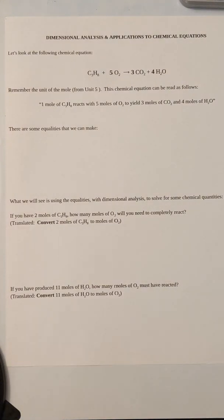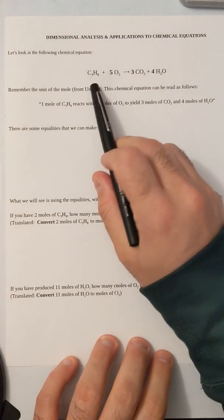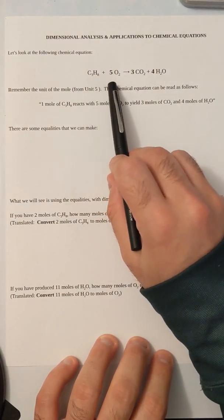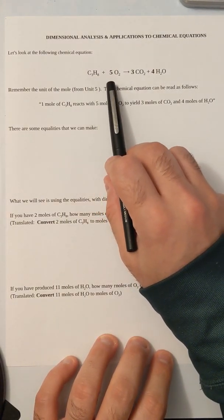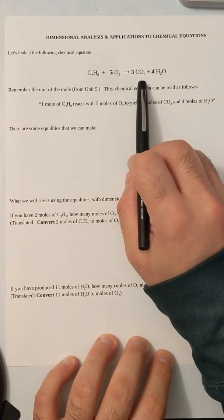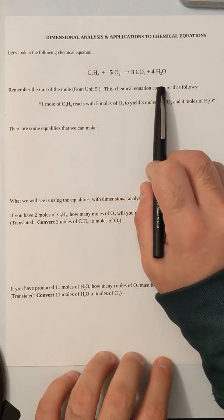All right, hey chemistry. So this is a bit of an application to dimensional analysis, but we're going to look back at chemical reactions and chemical equations. So let's look at the following chemical equation. We have C3H8, which is known as propane, plus 5O2 yields 3CO2 and 4H2O. This is a balanced chemical equation.